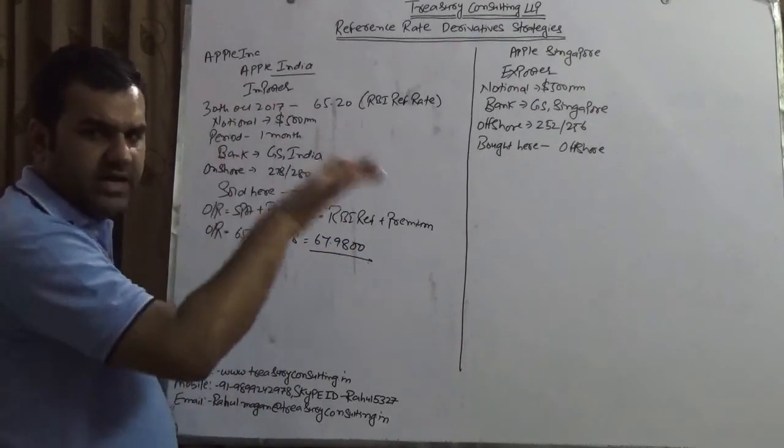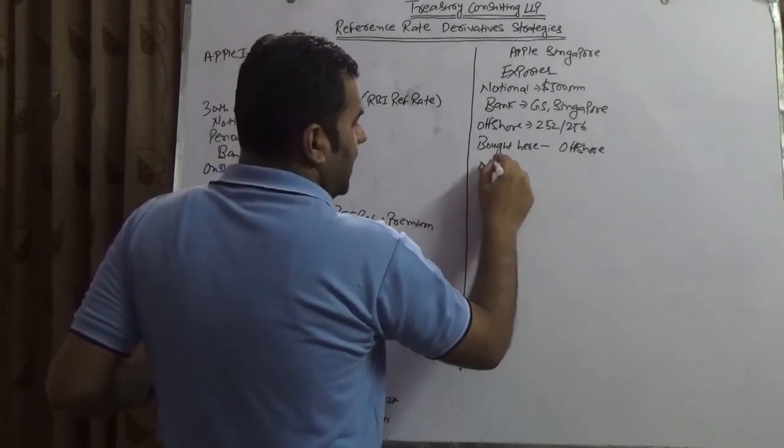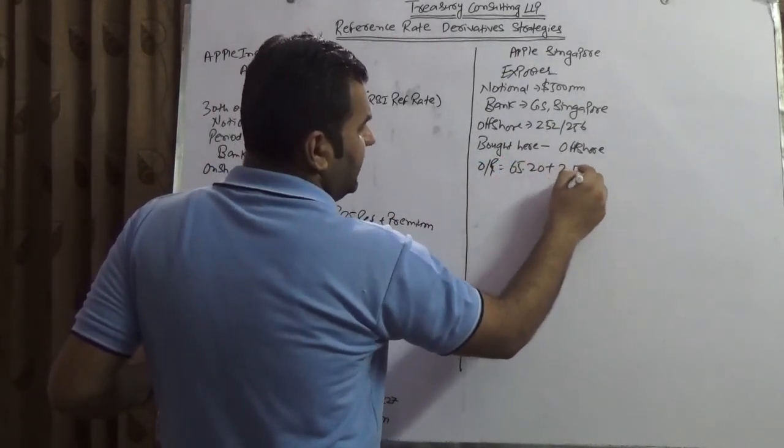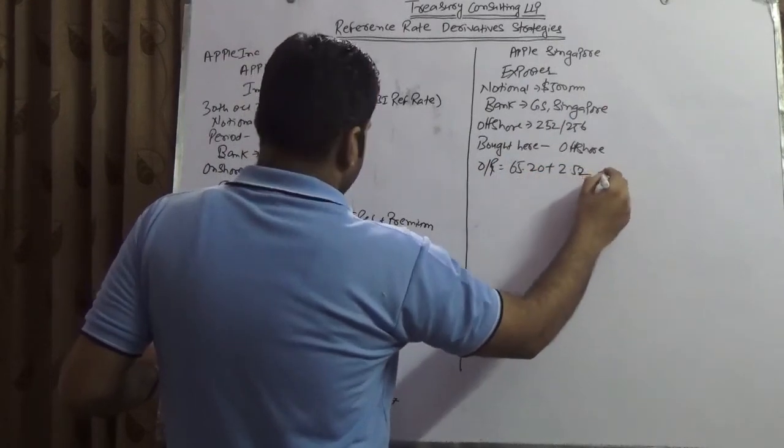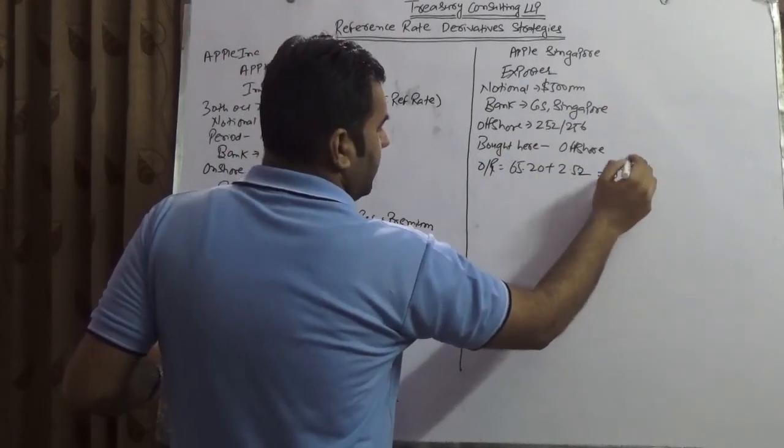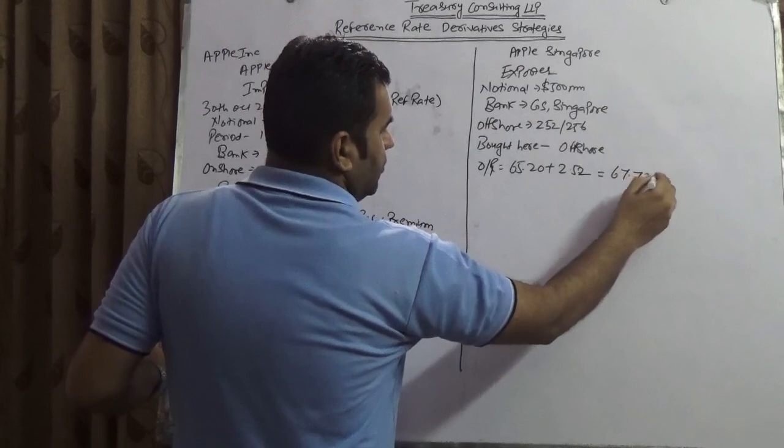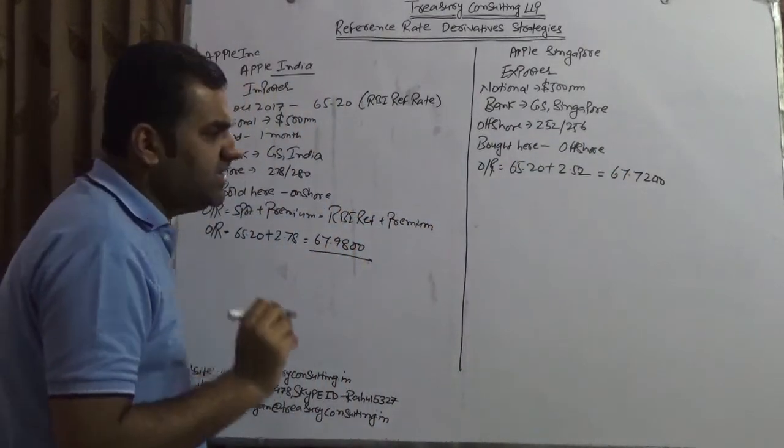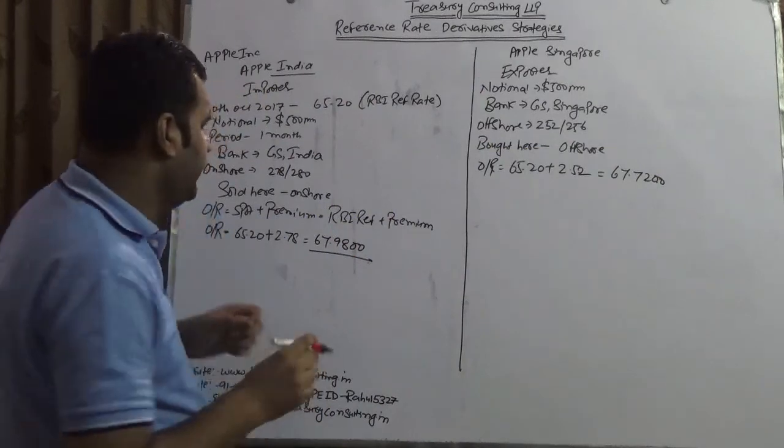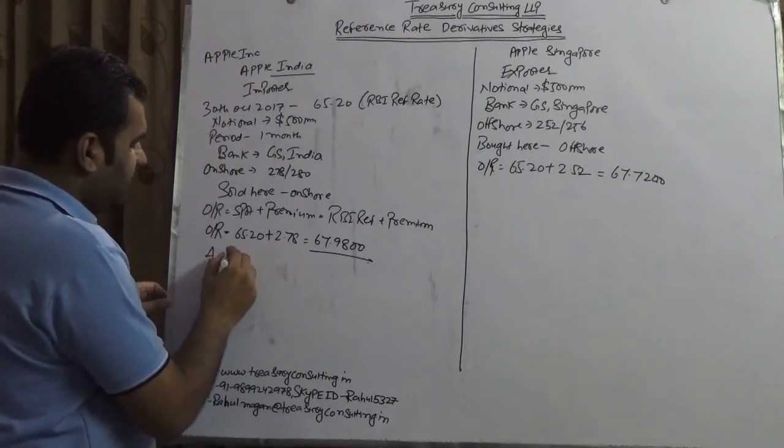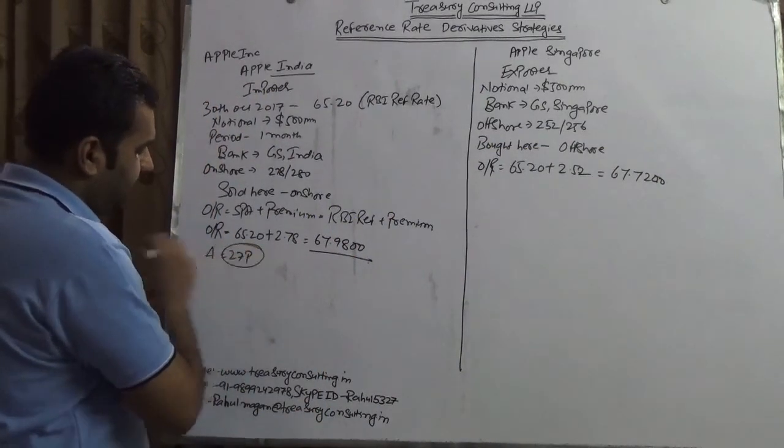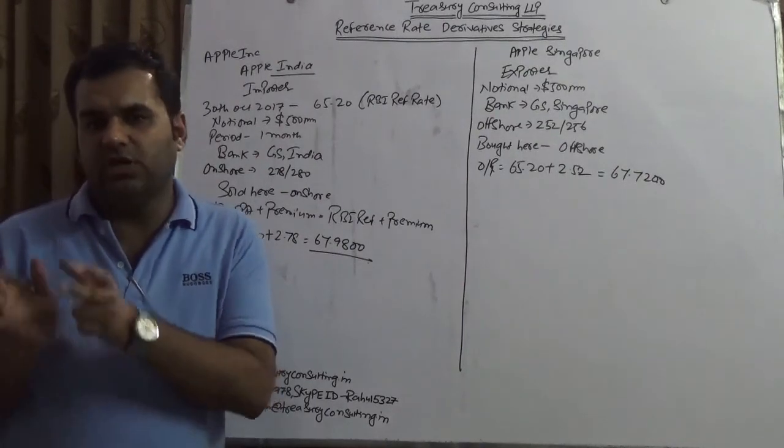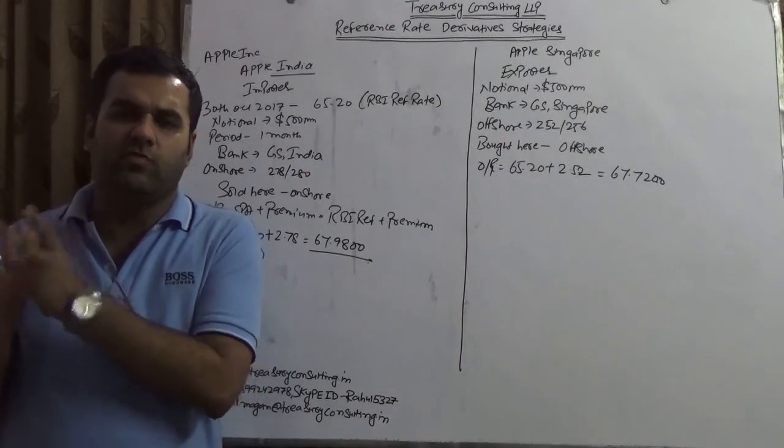In Singapore the outright would be 65.20 plus 2 rupees 52 paisa, which equals 67.72. It means there is a spread which we refer as a delta of 27 paisa here.